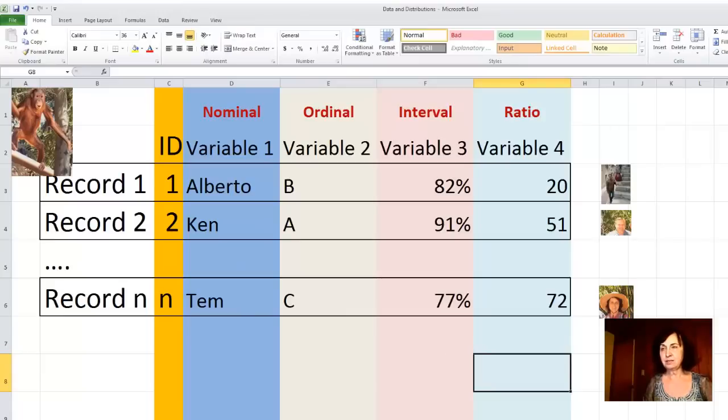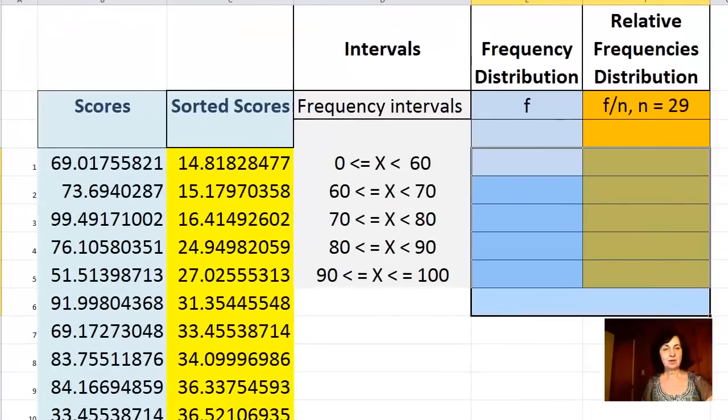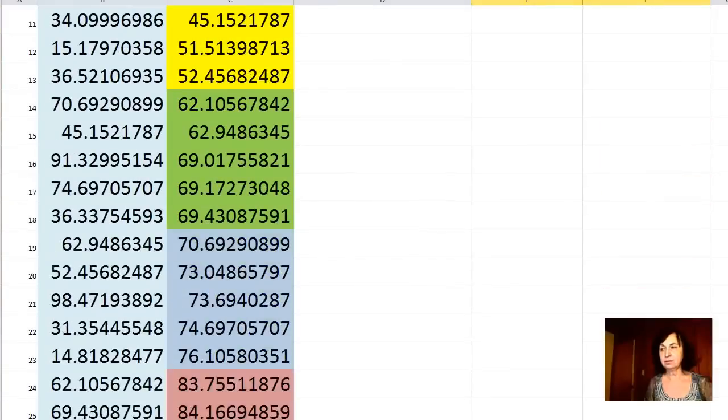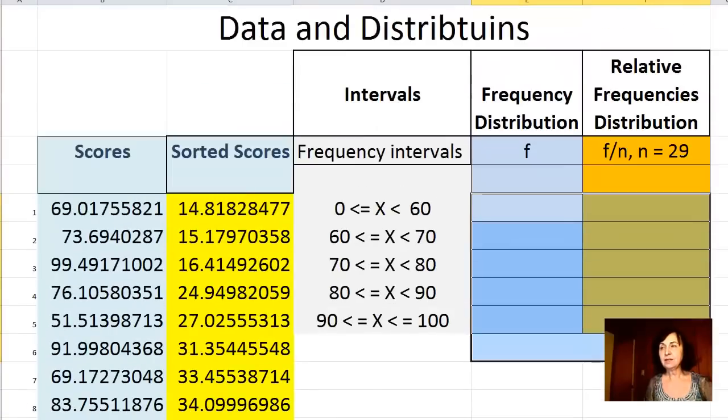This is how a simple database looks. Here I generated some scores—not my students, these are randomly generated scores. I have 29 scores total, and I organize these scores from least to greatest.